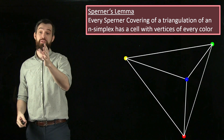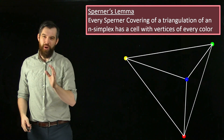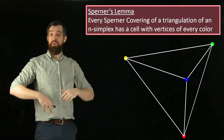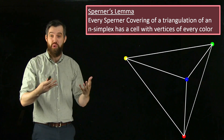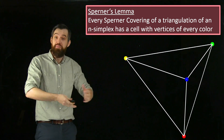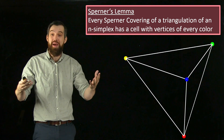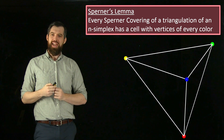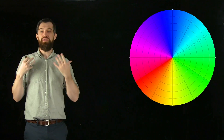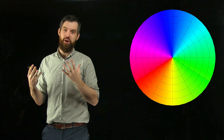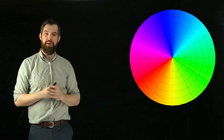We've got Sperner's Lemma, proven combinatorially — I haven't used any high-level math, just drawn some pictures and taken paths, and we've got this really nice claim. Now let's return to Brouwer's fixed-point theorem and use the proof of Sperner's Lemma to prove it.